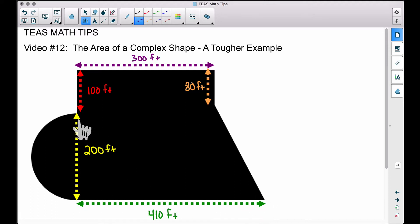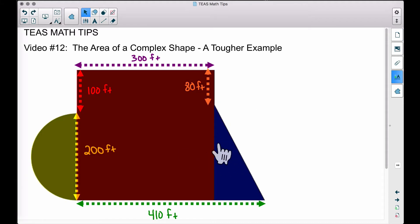So we have these measurements given to us: 300 feet across the top, 410 feet across the bottom, the diameter of this half circle being 200 feet, and then we have some extra measurements here as well—this 100 feet and this 80 feet. Hopefully you can see here we have a darker triangle, a burgundy-ish square perhaps, and this half circle over here, some type of weird shade of yellow or green.